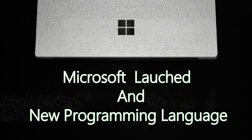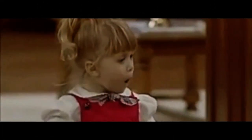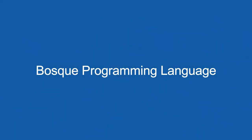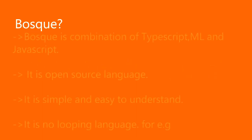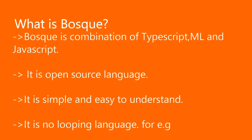Microsoft is introducing a new open source programming language called Bosque. Bosque is inspired by the syntax of TypeScript, the semantics of machine learning, and JavaScript. The main purpose behind Bosque is to build a functional programming language which will eventually help us move beyond the paradigm of structural programming. In short, the language will be familiar to everyone who has ever built a front-end app.